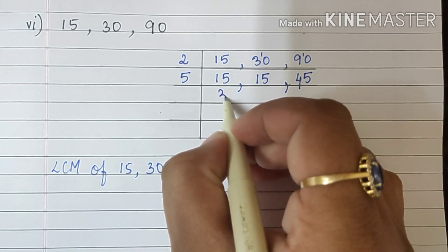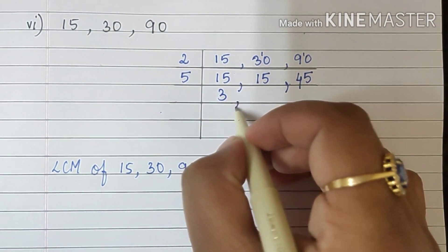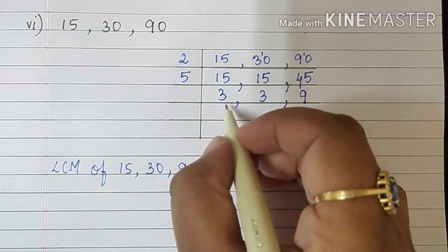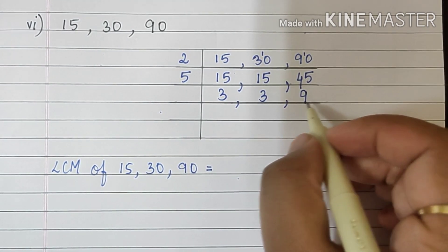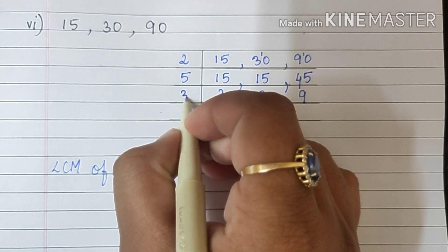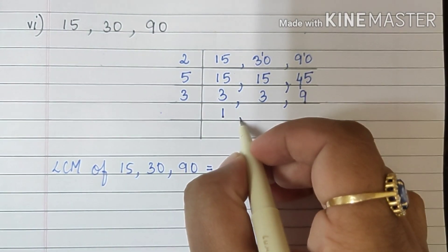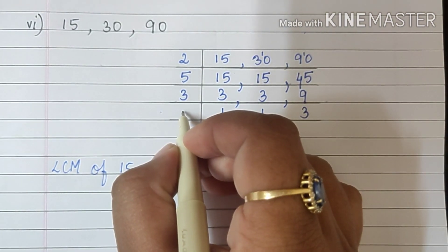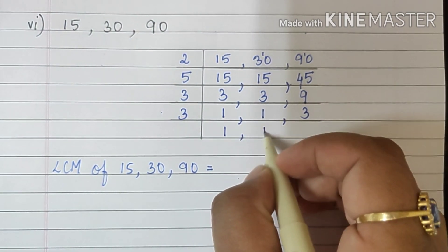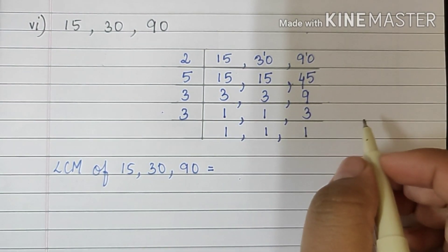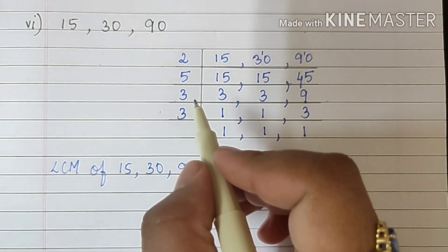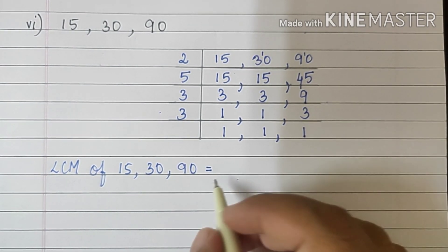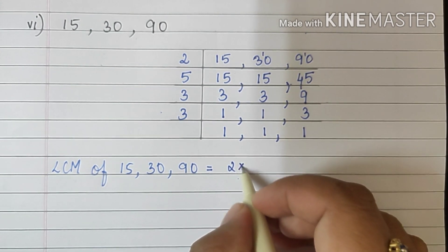So let's begin with 5. 5 3s are 15, 5 3s are 15, 5 9s are 45. So 2 multiplied by 5 multiplied by 3 multiplied by 3.